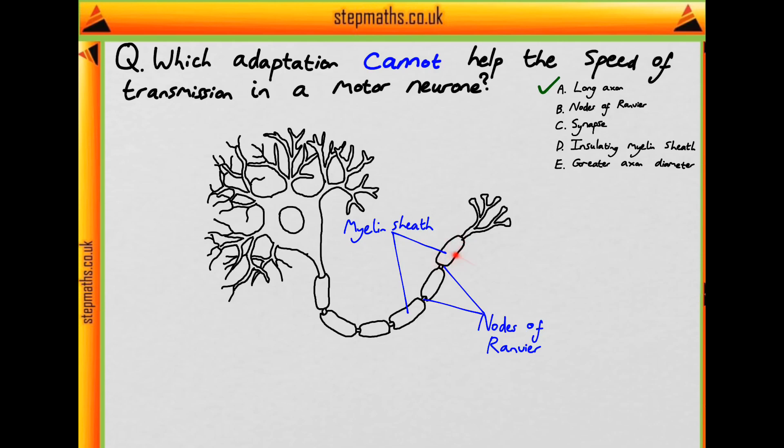And so myelin sheath is insulating and it prevents any current from occurring there, and so instead the current jumps between these nodes of Ranvier. As these nodes of Ranvier lack the myelin sheath, the current can occur here, and this allows large portions of the axon's length to be skipped out, those lengths being those which are covered by the myelin sheath.